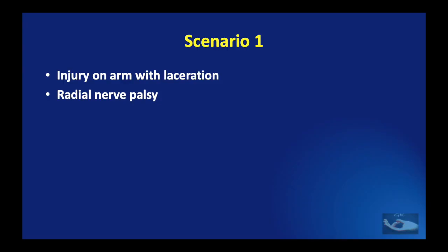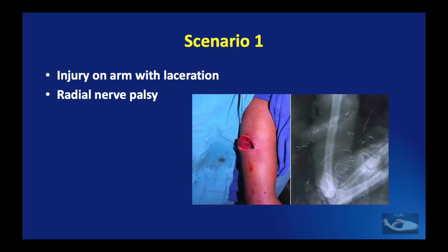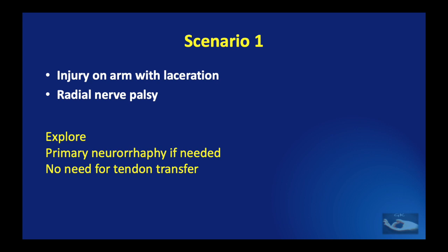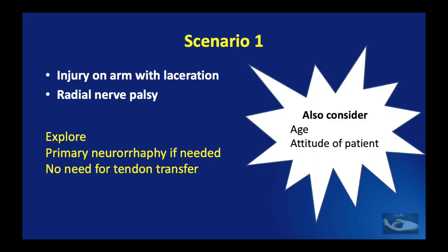The first scenario: a patient presenting with an injury on the arm with a laceration along with a radial nerve palsy and no associated fracture — as in a patient who has had an assault injury on the right arm. He needs exploration and primary repair of the nerve if needed. If there is a gap, nerve grafting is required. Usually in this sort of assault injury, there will be a cut of the nerve, and when explored immediately, primary neurorrhaphy can be done. There is usually no need for a tendon transfer or internal splinting.